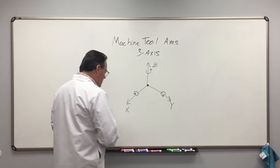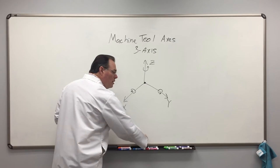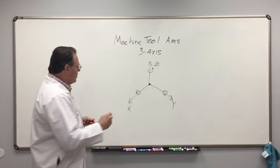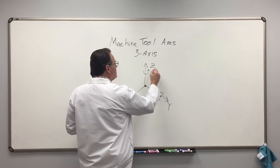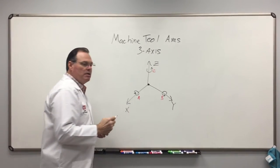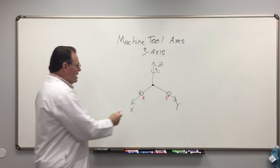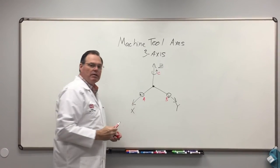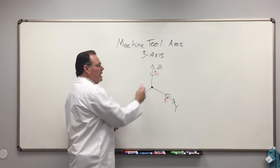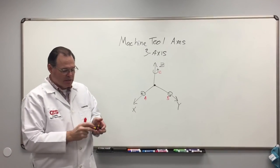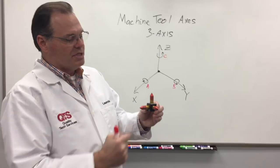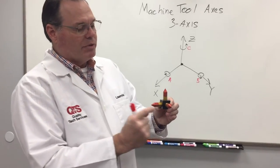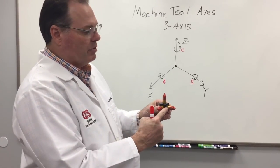Now we designate these as a for x, b for y, and c for z. So a rotates around the x-axis, b rotates around the y-axis, and c rotates around the z-axis, such as my little diagram shows right here. We have c rotating around z, a rotating around x, and b rotating around y.